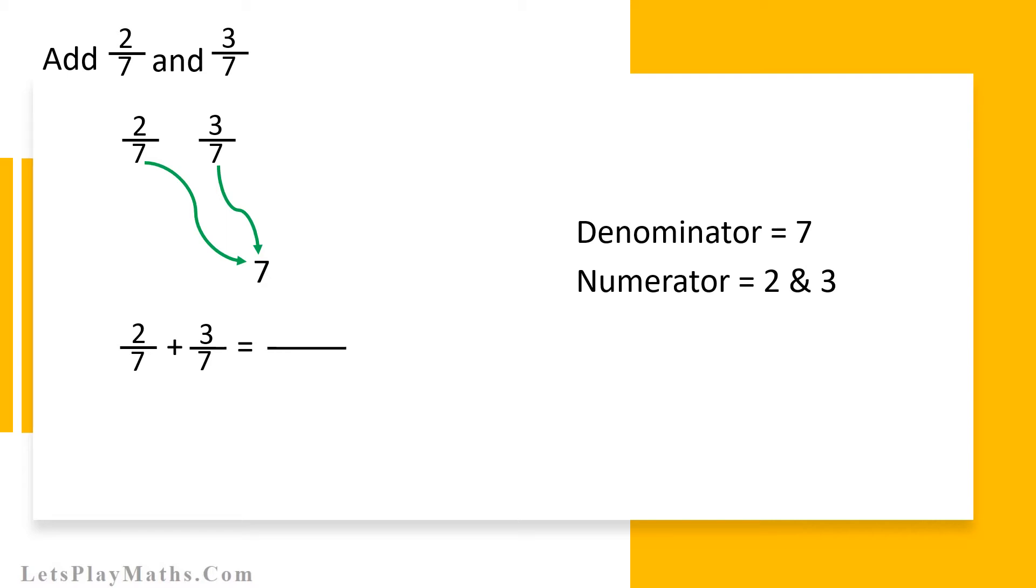In other words, if both fractions denominators are same and if we add them, then their resultant denominator will be their common denominator, that is number 7 as shown here. And the numerator will be addition of both numerators of the fractions. In this case it will be 2 plus 3.